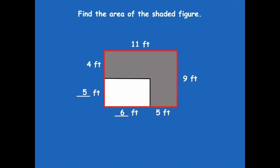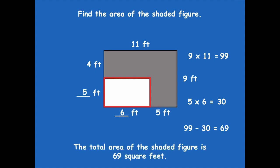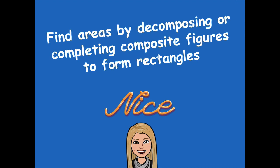I chose to find the area of the entire shape: 9 times 11 equals 99. Then find the area of the smaller unshaded rectangle: 5 times 6 equals 30. Subtract: 99 minus 30 is 69. So the total area of the shaded figure is 69 square feet.